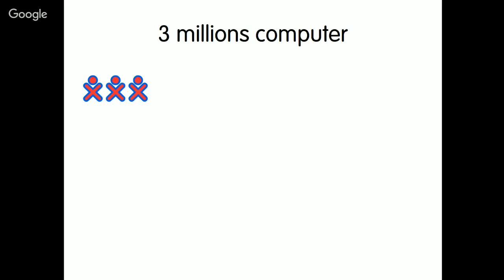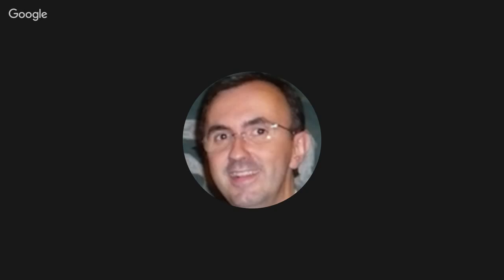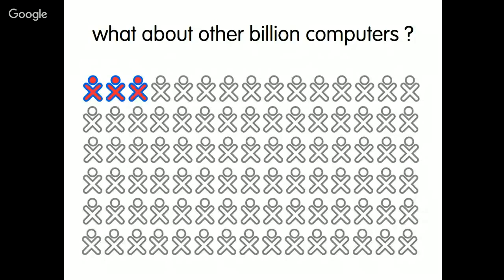My question is: what about all the billion computers? Could we have Sugar on all computers? I took the number of one billion because of a recent talk by Microsoft on Windows 10. Microsoft expects that in two years they could deploy Windows 10 on one billion computers all over the world. So I ask: why can't we deploy Sugar on one billion computers too? It's a good target, a good objective for us.